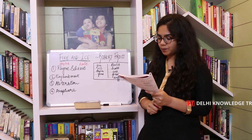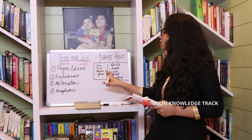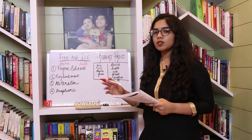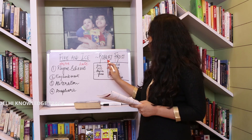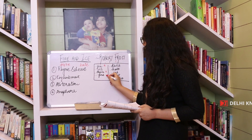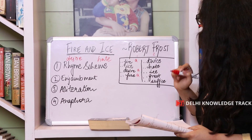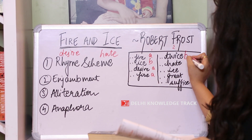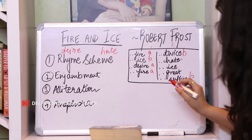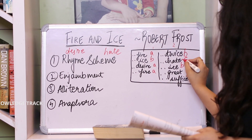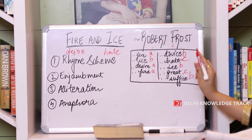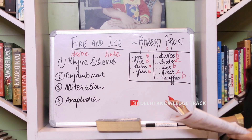Now for the literary devices — the rhyme scheme. I have written the last word of each sentence for both stanzas. The last words rhyme as follows: 'fire' rhymes with 'desire' and again 'fire' — that's A. 'Ice' rhymes with 'twice' and 'suffice' — that's B. 'Hate' rhymes with 'great' — that's C. So the overall rhyme scheme is A-B-A-A-B-C-B-C-B. It's a somewhat complex rhyme scheme, not a regular ABAB pattern, but that's how you figure it out.